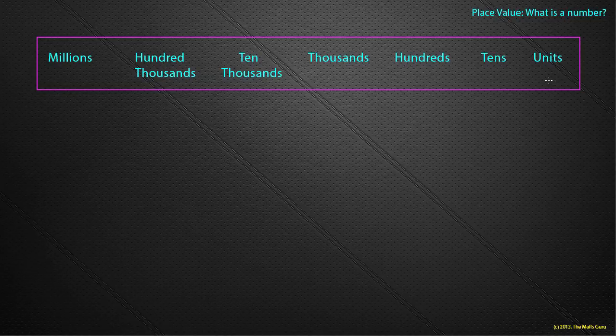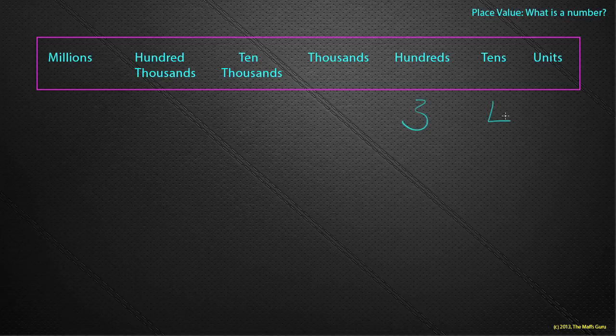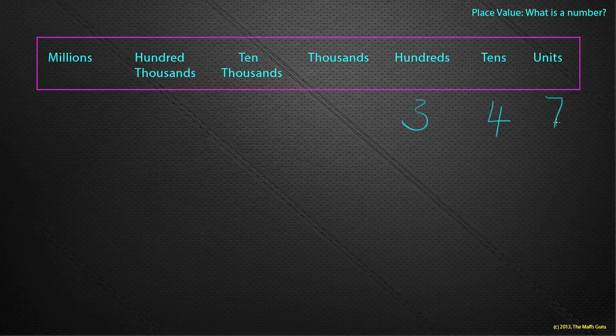And depending on where a digit sits in each of these columns, decides the worth of that number. So for example, if I have the number 347, you'll notice that 3 is in the hundreds, 4 is in the tens and the 7 is in the units.